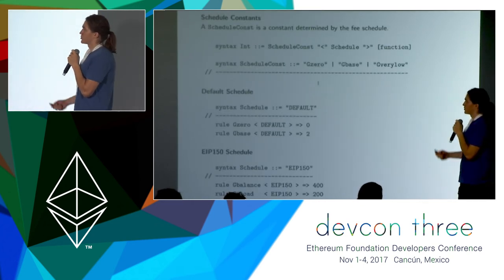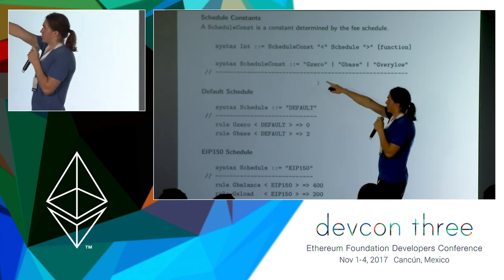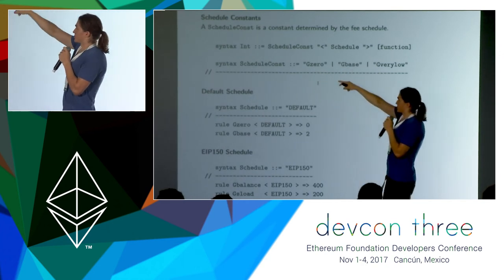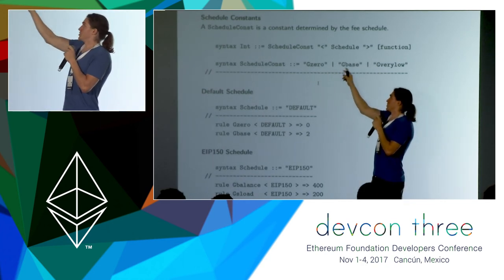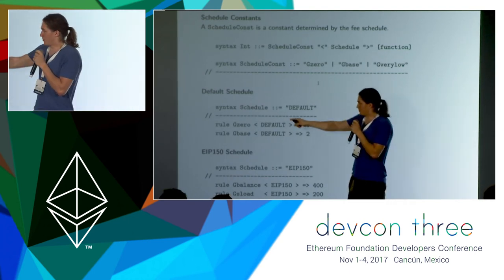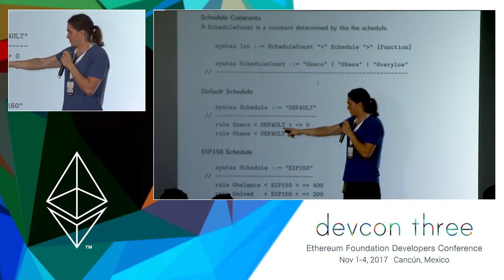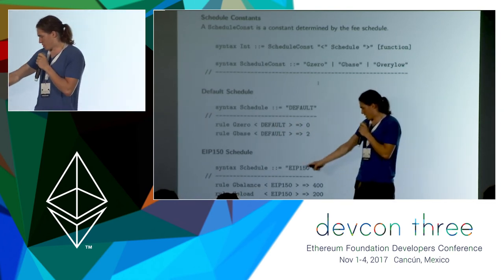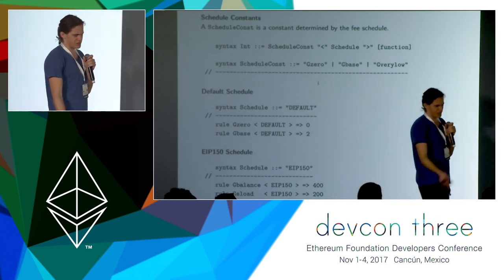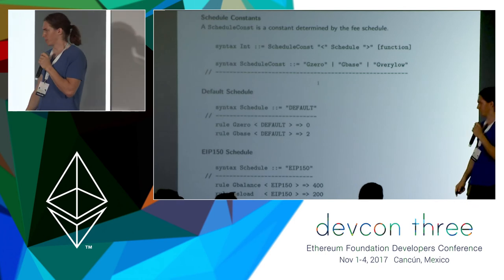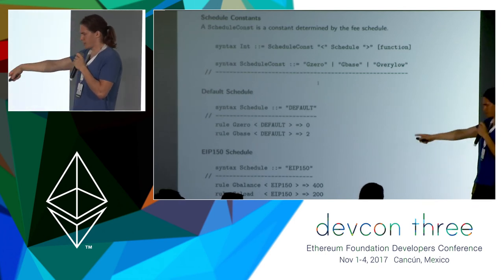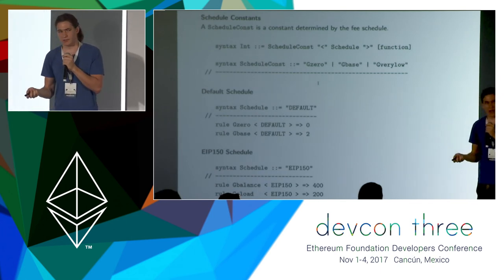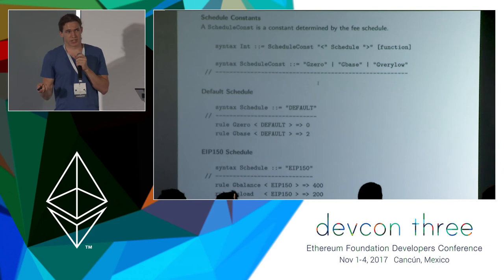Here's how we implement the schedules. You can produce an integer if you have a schedule constant and a particular schedule in brackets. Here are some schedule constants from the yellow paper: g0, gbase, gverylow. Here's the default schedule — it sets g0 to zero, gbase to two. The eip150 schedule changes gbalance to 400 over the previous schedule. For each new schedule change, you just update the schedule constants for that particular schedule. It's actually a command-line flag you can give the semantics to tell it which schedule to execute with.